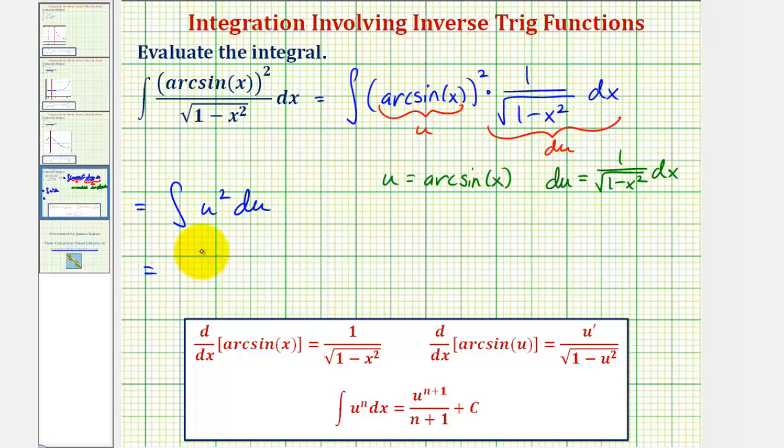So this would be equal to u to the third divided by three plus c, but of course our goal is to find the antiderivative in terms of x, not u. So now we'll substitute arc sine x for u to find the antiderivative in terms of x.